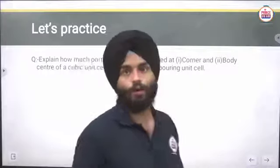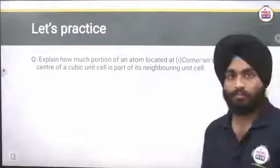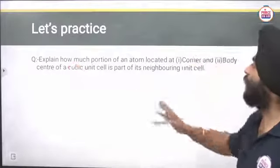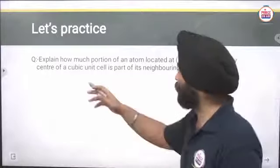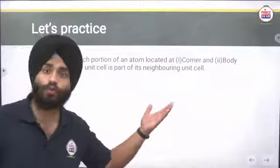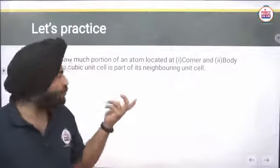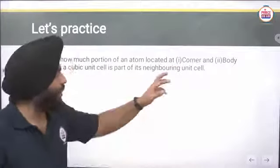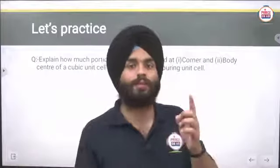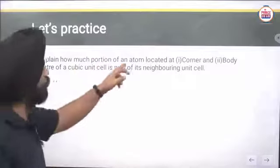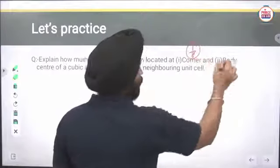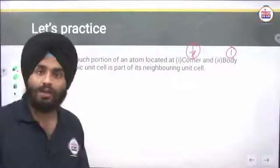Question: explain how much portion of an atom located at corners and the body center of a cubic unit cell is part of its neighboring unit cells. Answer: at the corner, the contribution is 1/8. At the body center, the contribution is 1, because the body center particle is not shared with any other unit cell.